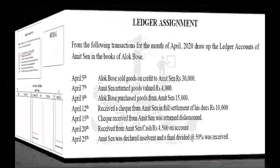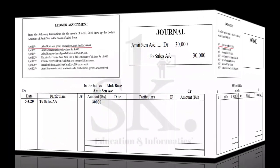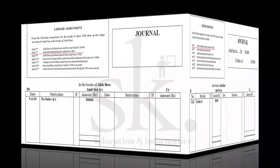Let's discuss how we pass the entry. The first transaction on 5th April: Alok Bose sold goods on credit to Amit Sen for Rs 30,000. Since we are doing this in the books of Alok Bose, Amit Sen being a personal account receiver will be debited and sales account credited. Therefore, sales account will be recorded on the debit side of Amit Sen's account for Rs 30,000.